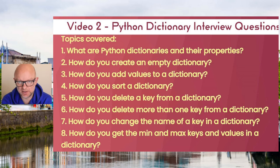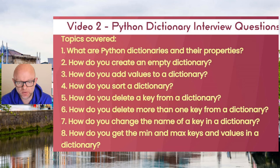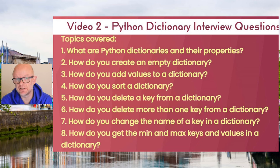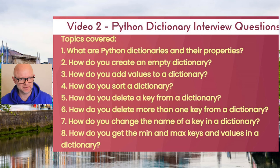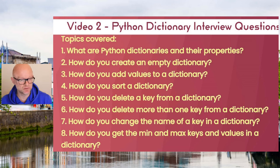Today we're going to cover a number of topics. Going through them quickly: some about dictionaries and their properties, how to create an empty dictionary, how to add values, how to sort, how to delete a key, how to delete more than one key, how to change the name of a key, and how to get the min and max keys and values in a dictionary. We'll also be flipping into code with examples as we go through.